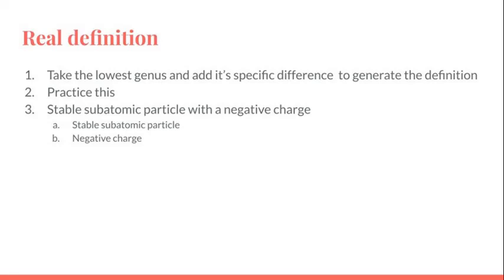So what we're doing here is we take the lowest genus and then we add the specific difference to generate the definition. So the species man has the genus animal and the specific difference rationality. So the real definition is rational animal.